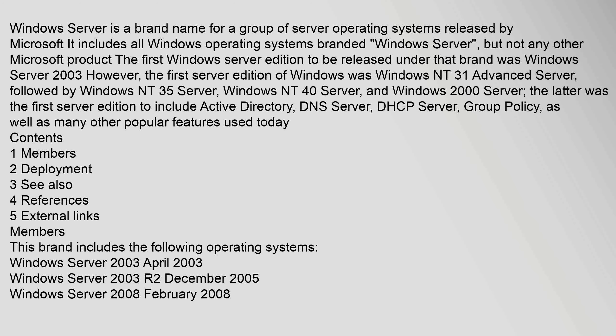Windows 2000 Server was the first server edition to include Active Directory, DNS Server, DHCP Server, Group Policy, as well as many other popular features used today.